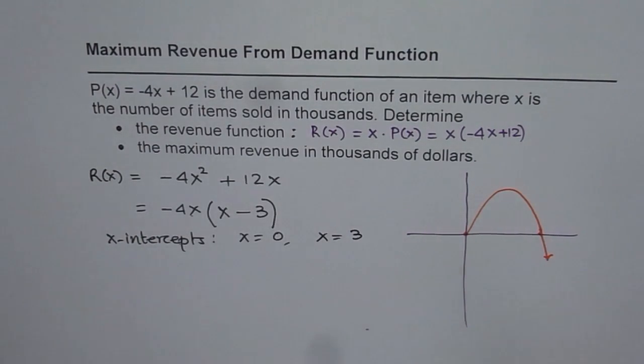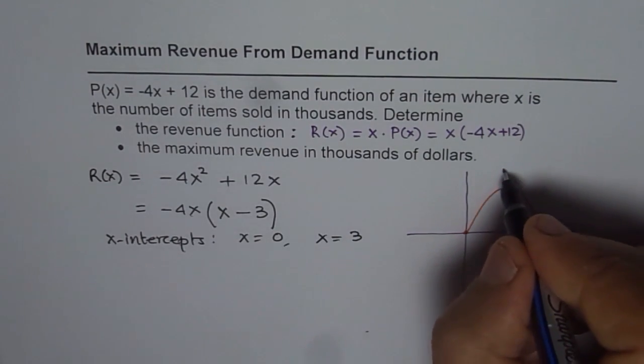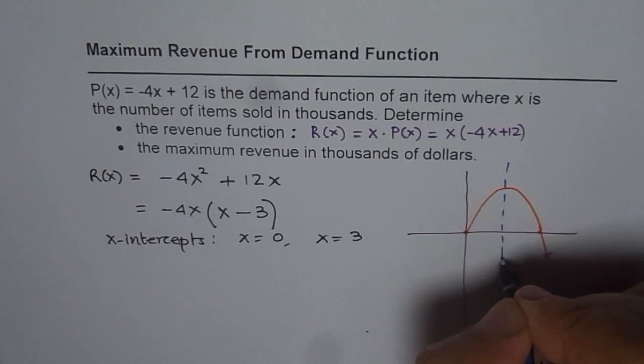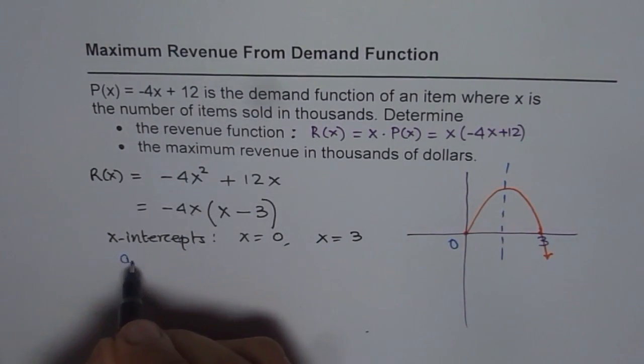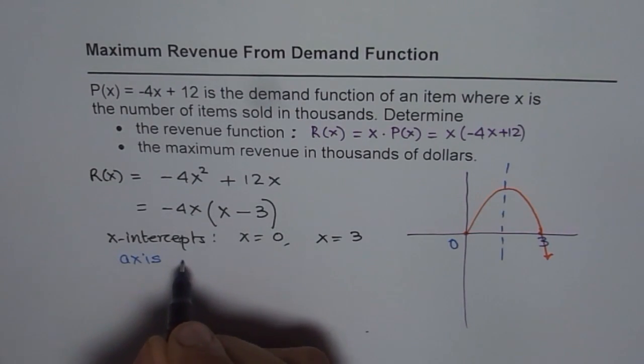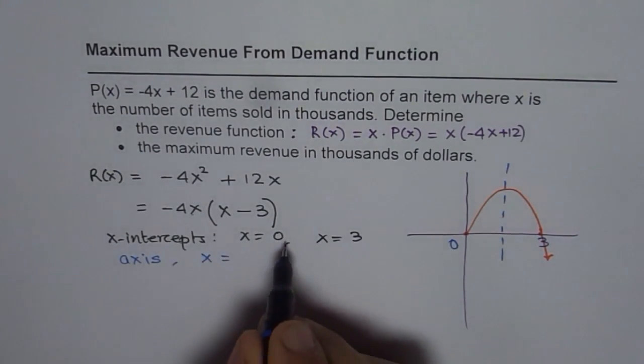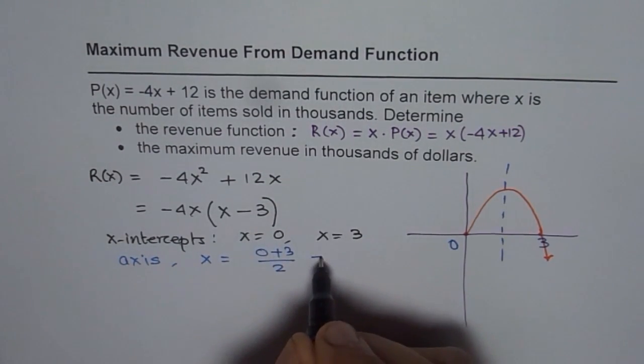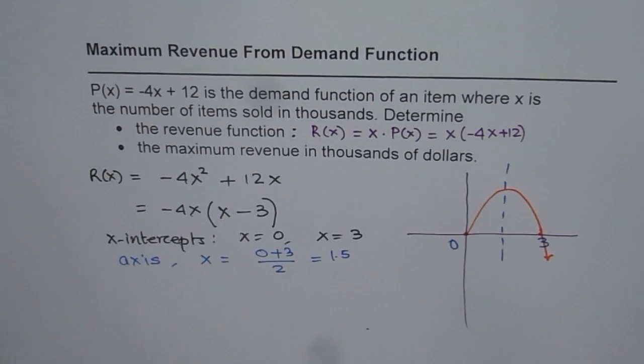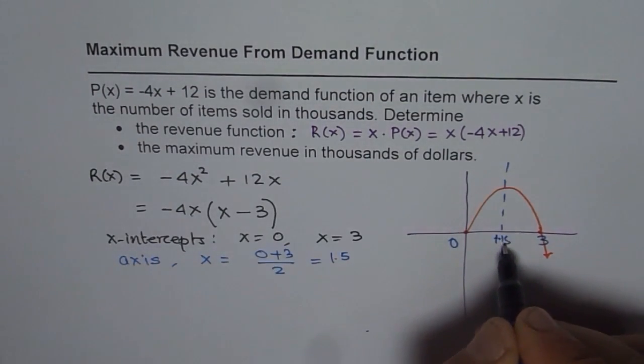The average of these two will give us axis of symmetry, correct? So the average here is axis of symmetry, which is between 0 and 3. So axis will be at x equals to average of these two values, that is (0 + 3) / 2, which is 1.5. So this is at 1.5.